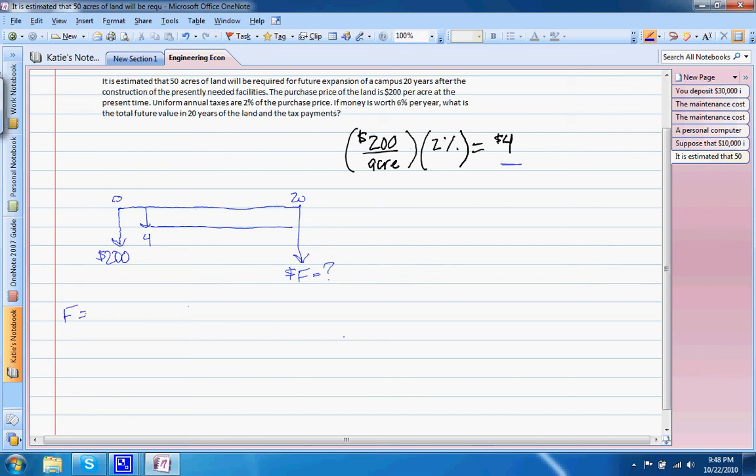So we need to convert our $200 to future value and our $4 to future value as well. So we have our $200, and our factor will be F, find F, find future, given present, i, N, plus 4, and this will be find F given annual, i, N.